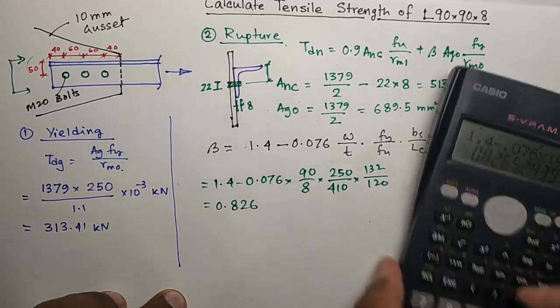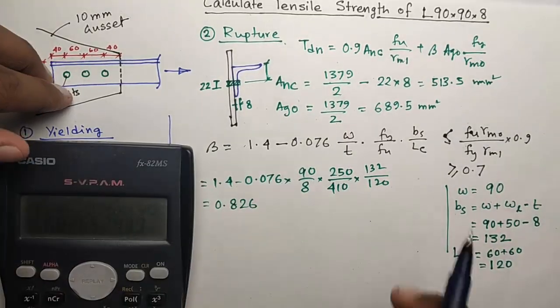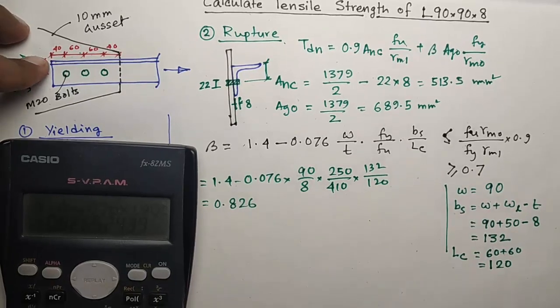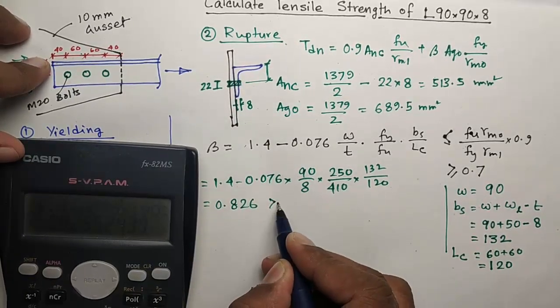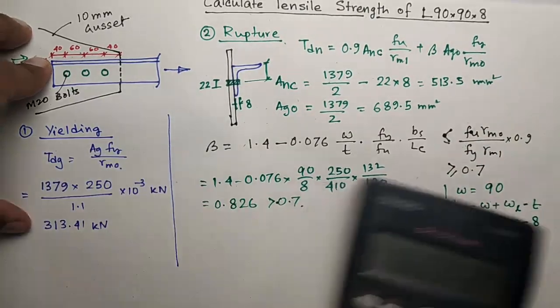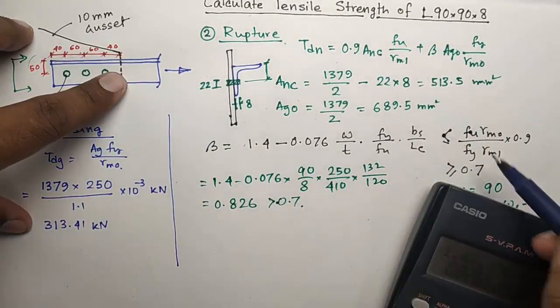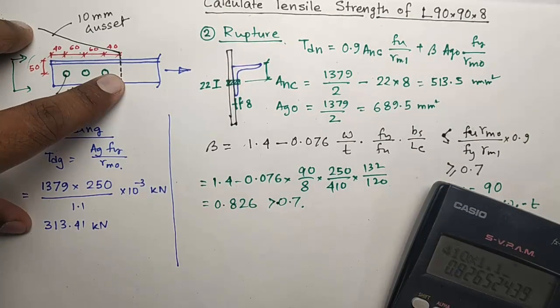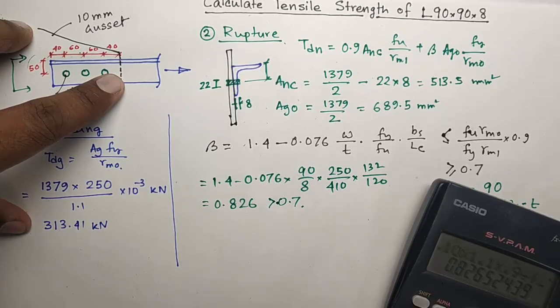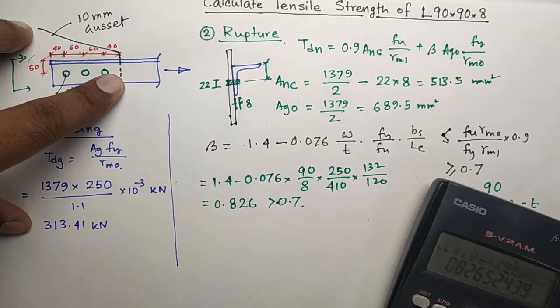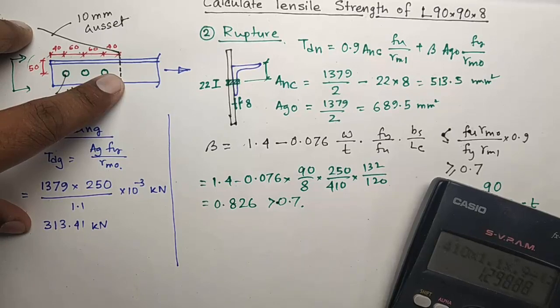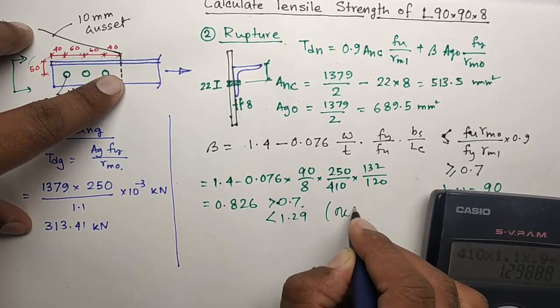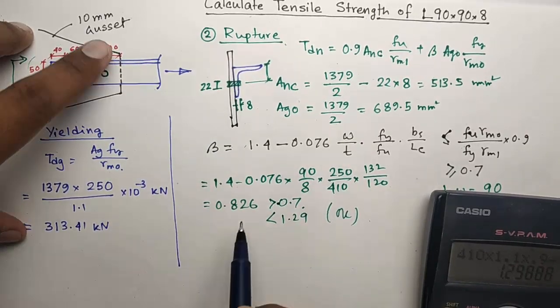Beta equals 0.826. You must check if this is less than or equal to this limit and greater than or equal to 0.7. So it is greater than or equal to 0.7, okay.